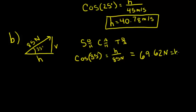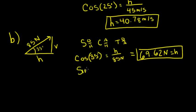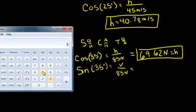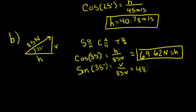For the vertical, we're looking for the opposite side of the angle and we know the hypotenuse, so we use sine. Our answer is 48.75 newtons, and now we've found the vertical component.